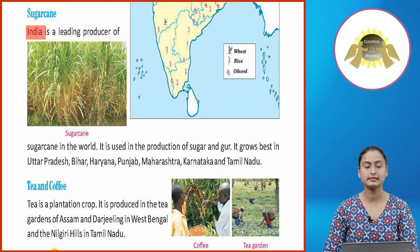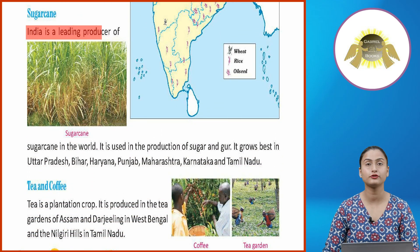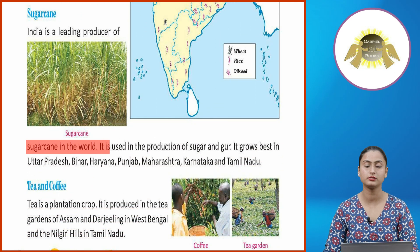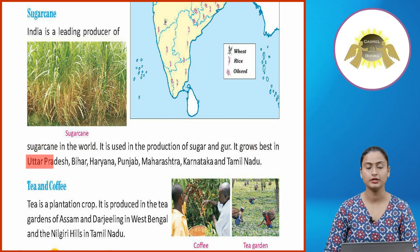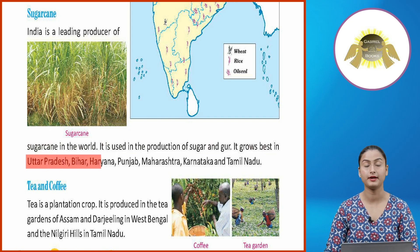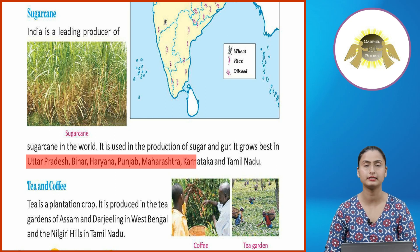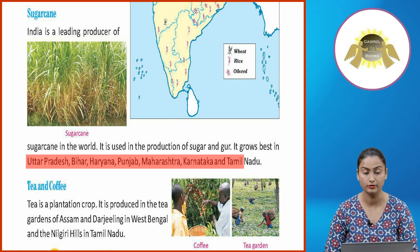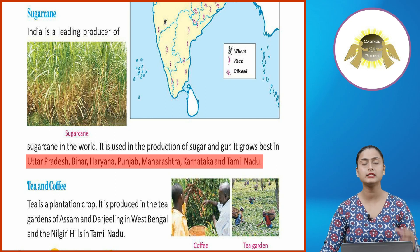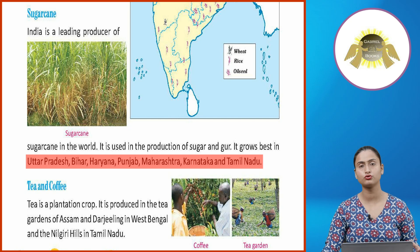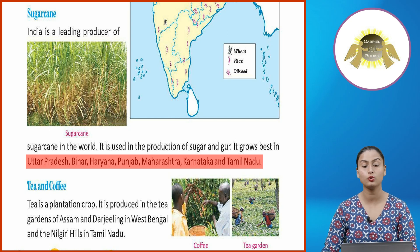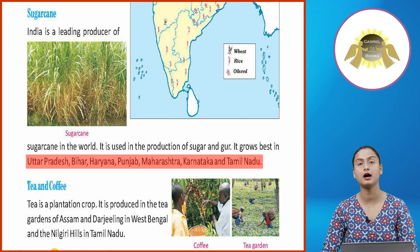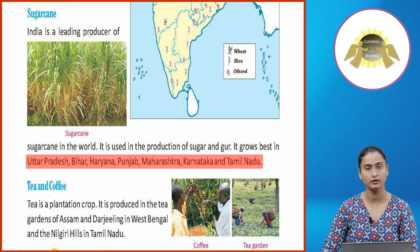India is a leading producer of sugarcane in the world. It is used in the production of sugar and jaggery. It grows best in Uttar Pradesh, Bihar, Haryana, Punjab, Maharashtra, Karnataka, and Tamil Nadu.